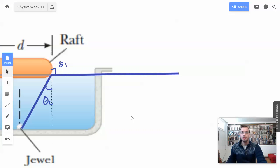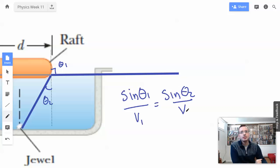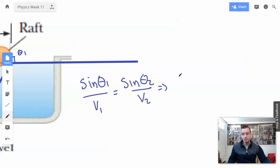Okay. Well, let's start with some of the math, throw out some Snell's law. Sine of theta 1 over velocity 1 equals sine of theta 2 over velocity 2. Okay. So theta 2, we're going to say sine of theta 2 equals V2 over V1 times sine of theta 1.